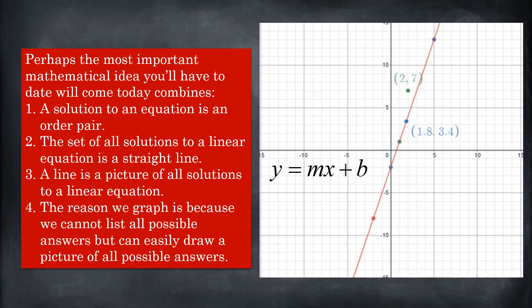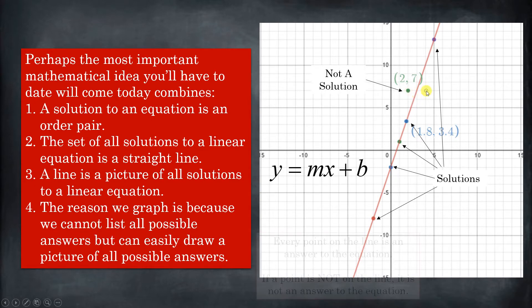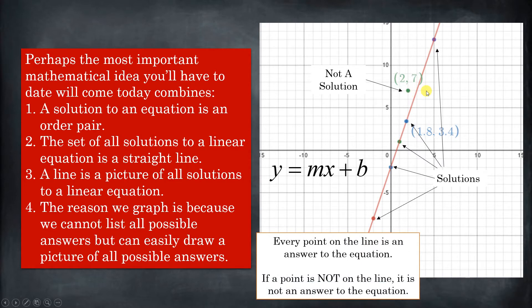Now, when you have a graph, every single point is a solution to some equation. Every point on the line will be a solution to a linear equation. And any point that's not on the line, not a solution, right? So all of these points right here are solutions. And this point right here is not a solution, and it's not because it's not on the line.